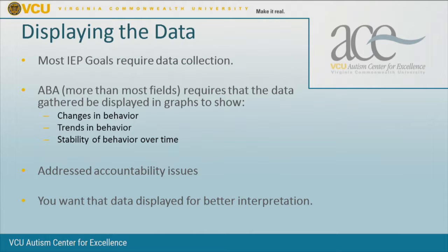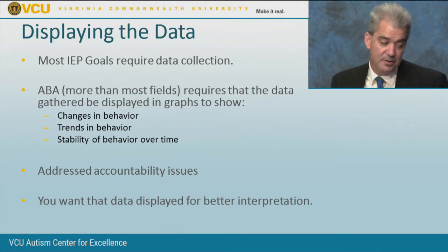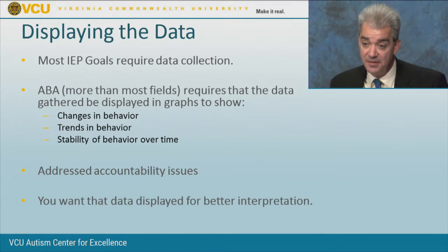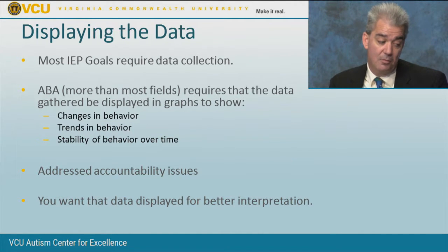When we graph our data, we're looking for changes in behavior — not whether behavior occurred or didn't occur, but whether behavior is going up, going down, or staying the same. Is it trending in the right direction or the wrong direction, or are we seeing stability over time? This helps us address accountability issues with the legal ramifications of FBA and BIP, and we want the data displayed so we can make better decisions.